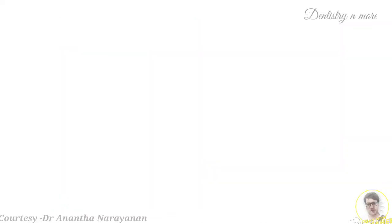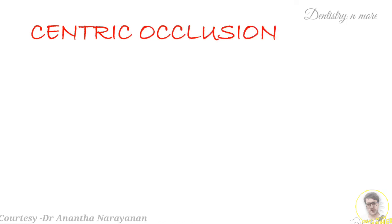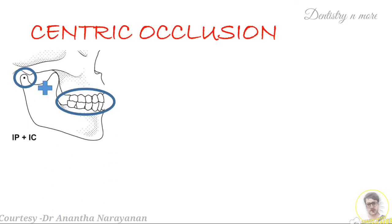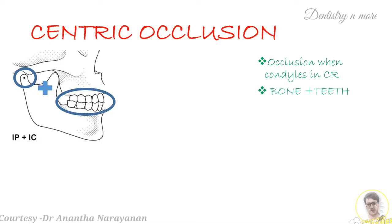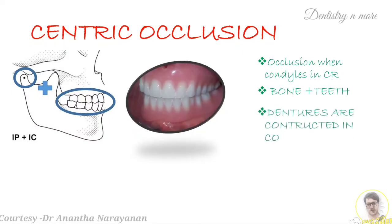Moving on to centric occlusion — take a closer look at this picture. The picture has two circles, one at the bone and one at the teeth, indicating that centric occlusion is the occlusion that is present when the condyles are in centric relation. The occlusion that is present when the condyles are in centric relation is called centric occlusion. So centric occlusion takes both bone and teeth into consideration. The most commonly we see centric occlusion in complete dentures.